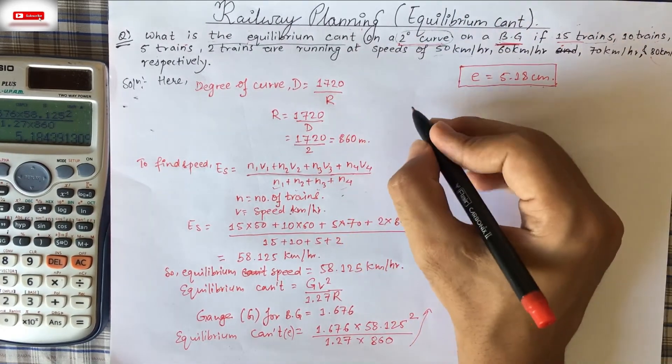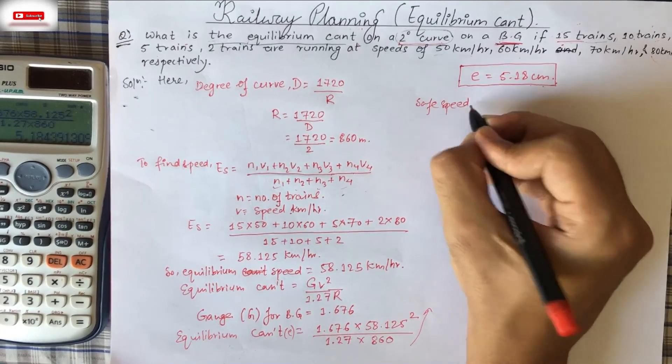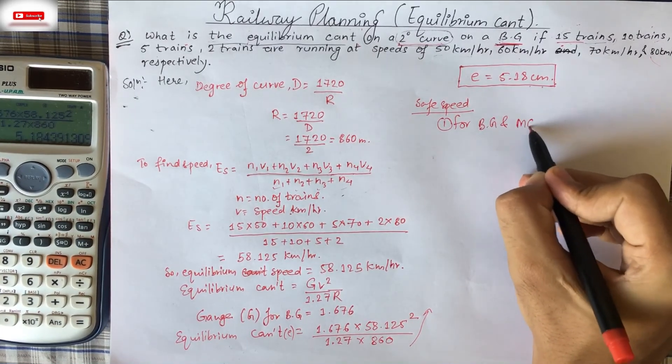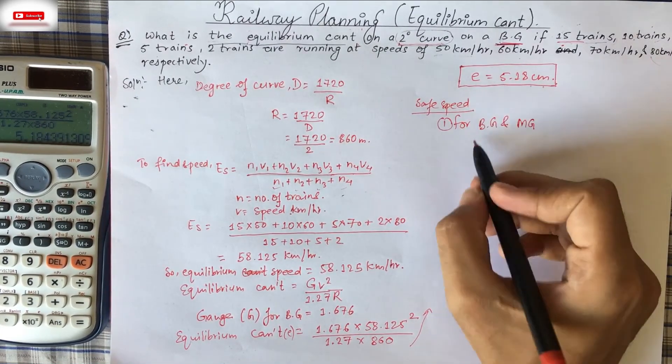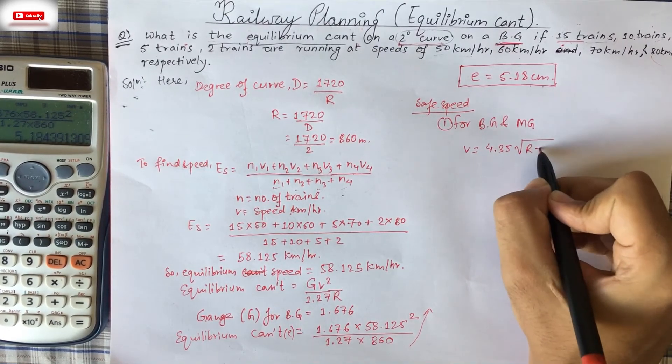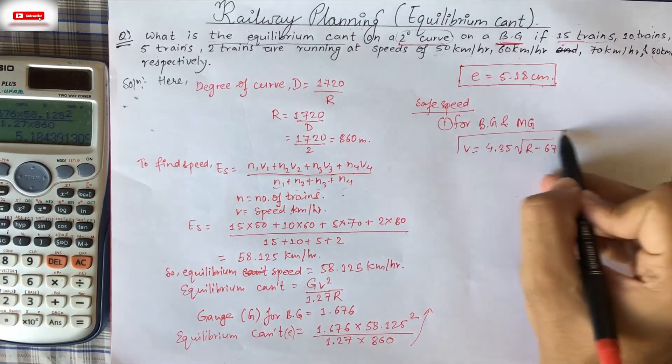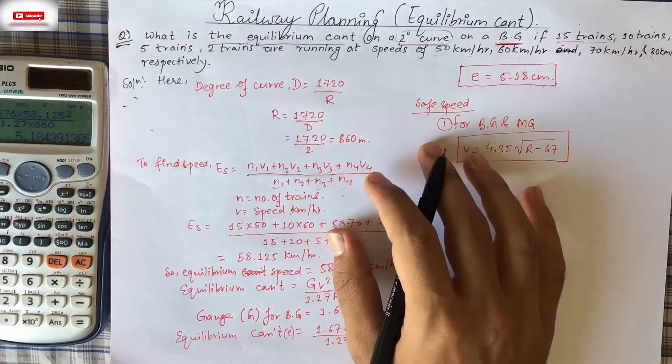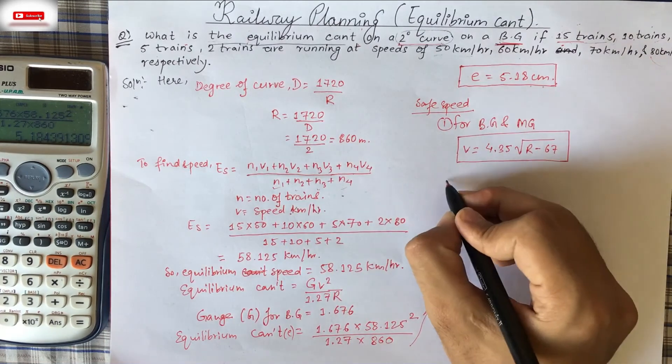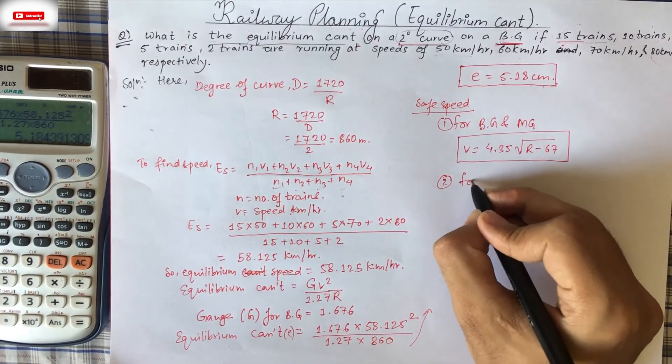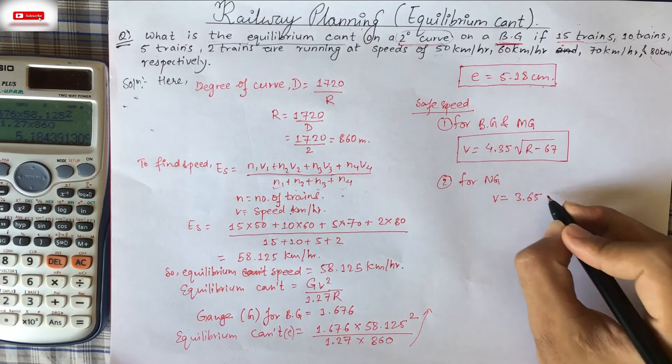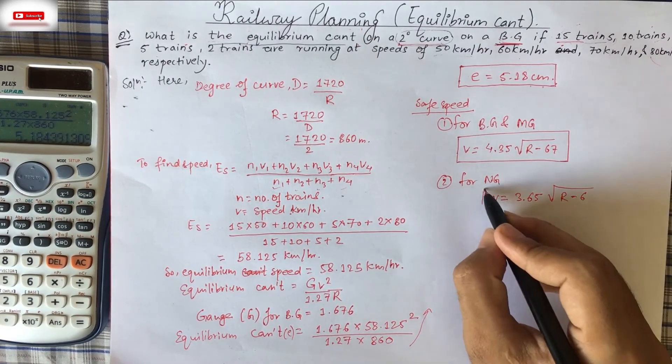And I will be solving here, if like question says find the safe speed. Safe speed, like for BG and meter gauge. If question asks us to find safe speed then formula will be 4.35 root R minus 67. This will be the formula. Here we know, we don't need to find, no need to find safe speed. If question will ask us then we'll find safe speed also. And for NG, narrow gauge is equals to 3.65 capital R minus 6. So this is our formula.